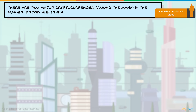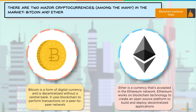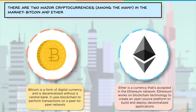Today we'll focus on two major cryptocurrencies: Bitcoin and Ether. Bitcoin is a digital currency that is decentralized and works on blockchain technology, using a peer-to-peer network to perform transactions. Ether is the currency accepted in the Ethereum network, which uses blockchain technology to create an open-source platform for building and deploying decentralized applications.